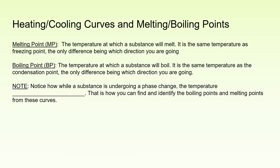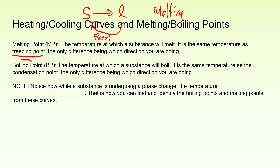We can use these curves to figure out the melting points and boiling points of a substance. The melting point is the temperature at which a substance will melt, and the boiling point is the temperature at which it will vaporize. Don't get confused — the melting point is the same temperature as the freezing point; it just depends on direction. Solid to liquid is melting, liquid to solid is freezing, but it's the same temperature. For water, the freezing point is 0°C and it also melts at 0°C. Likewise, the boiling point and condensation point are the same temperature.